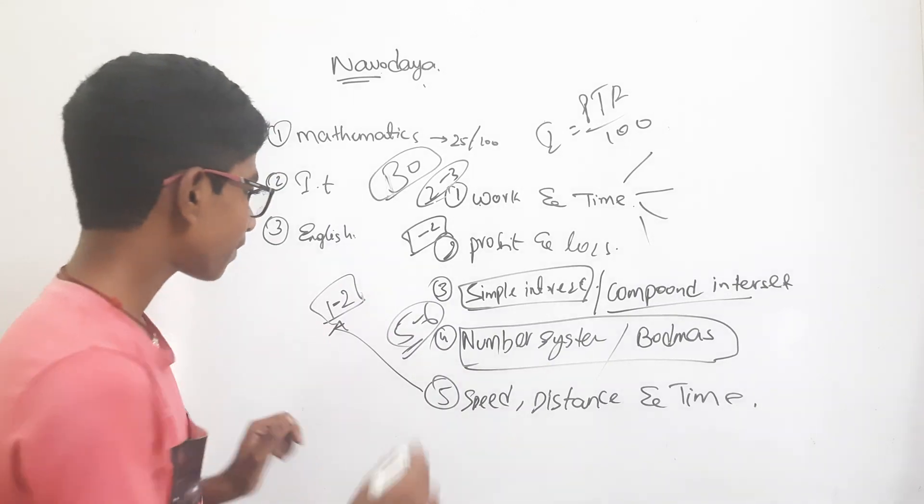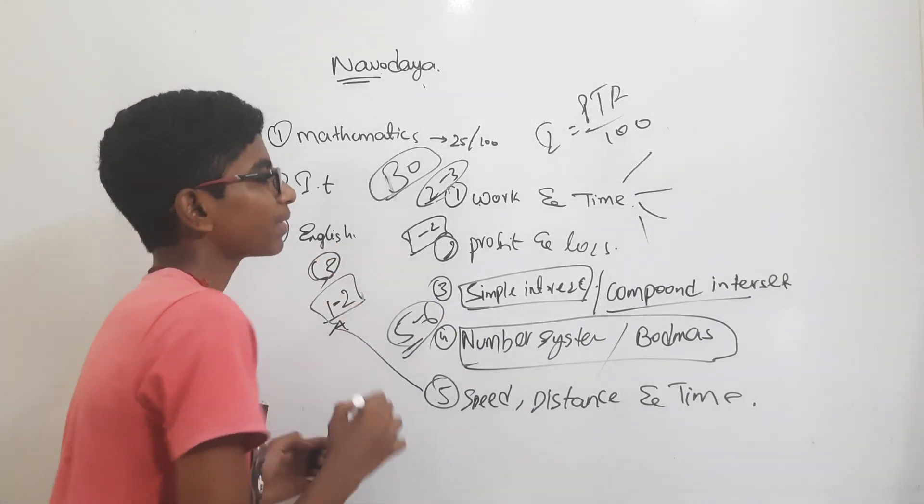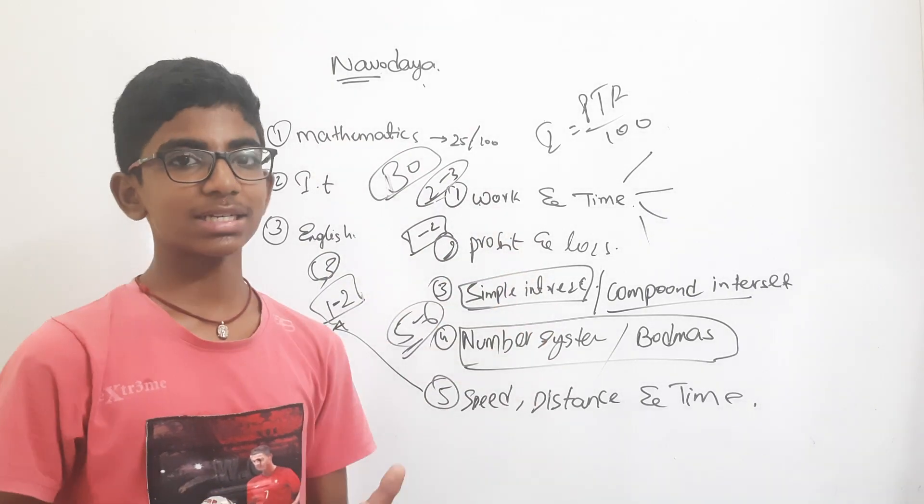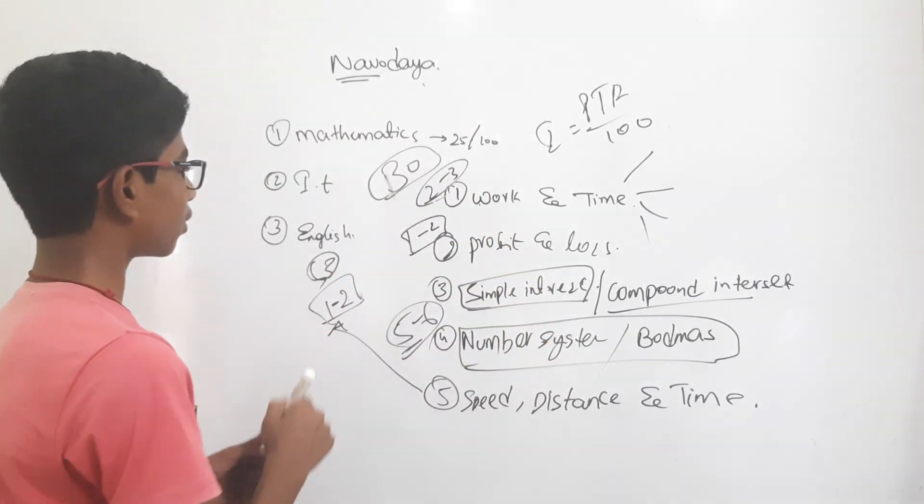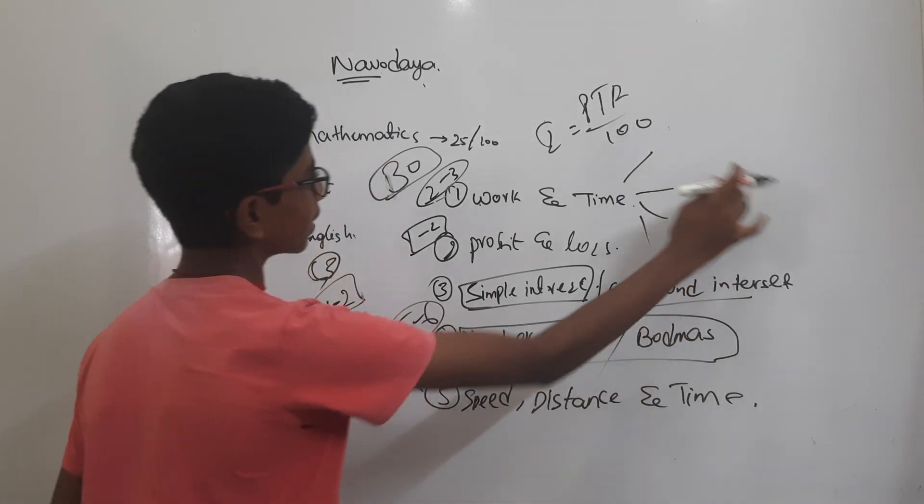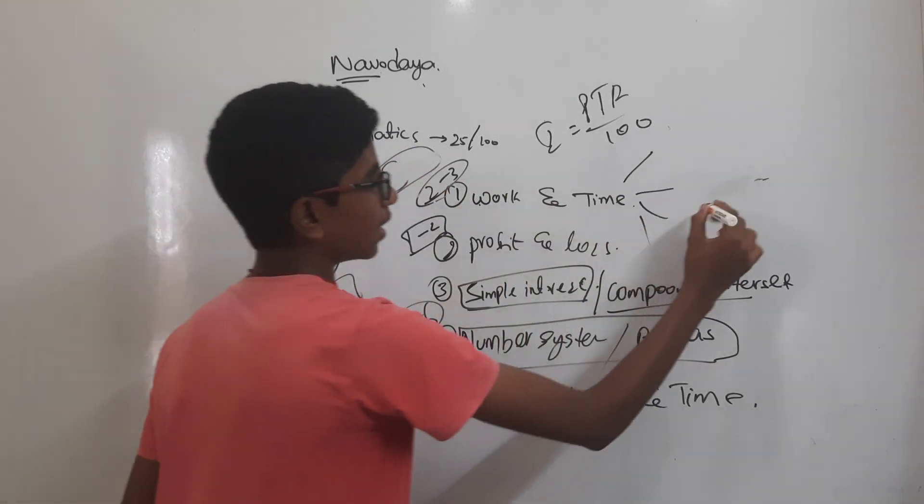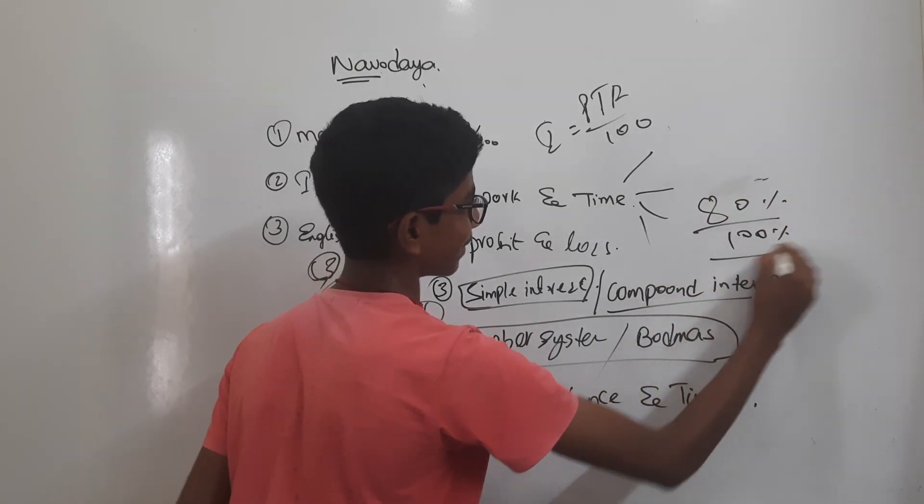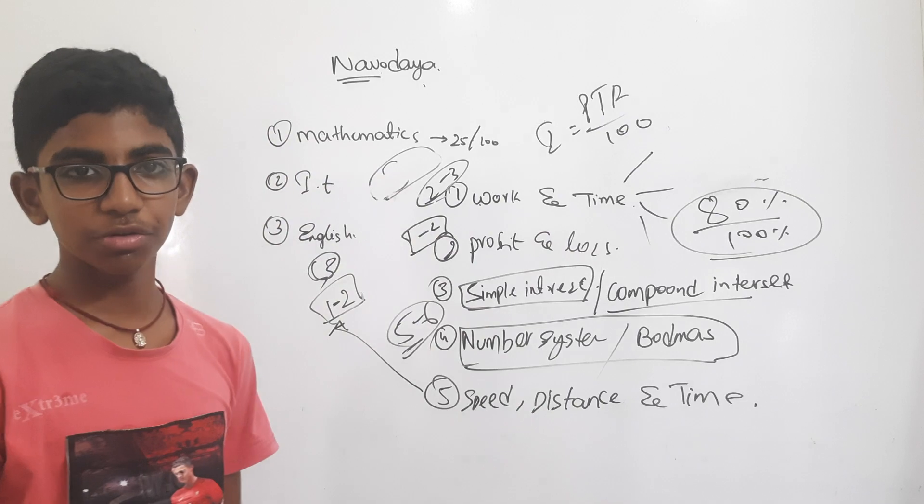These are the main topics covered in Mathematics. If you learn these lessons, you will confirm a score of about 40 plus. This is 80 percent out of 100 percent. In Mathematics, 80 percent marks you will get smoothly.